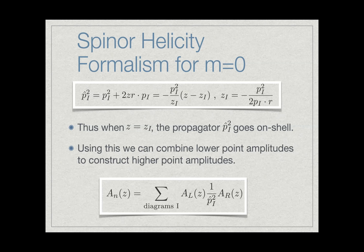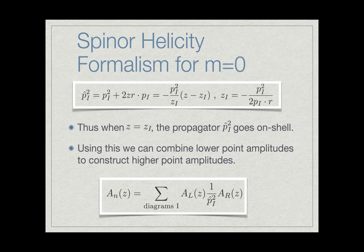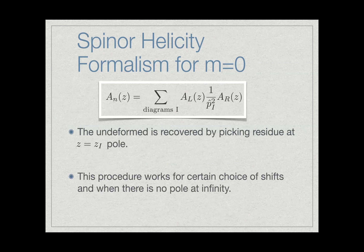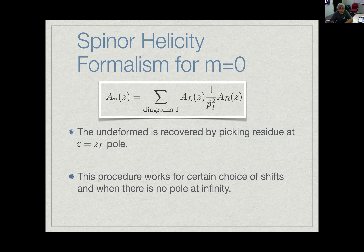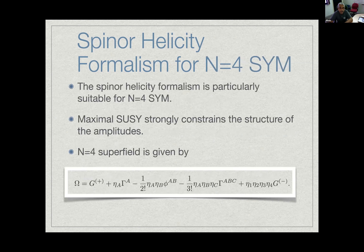A question was raised about the similarity to the optical theorem, where a line goes on-shell by inserting a delta function of momentum. The answer is that they are not really the same: the optical theorem still uses amplitude computation in a conventional way, so the amplitude computation remains messy. Here, one writes everything in terms of spinors, which makes it easier. This procedure works for certain choices of shifts when there is no pole at infinity. When there is a pole at infinity, one needs to be more careful and ensure that contribution is taken into account.